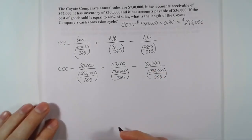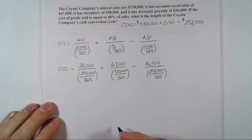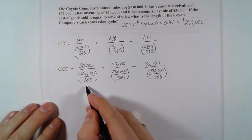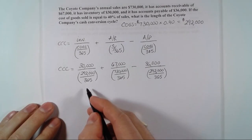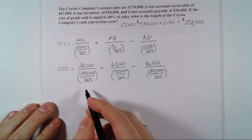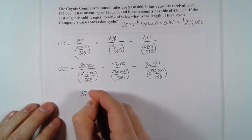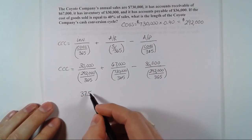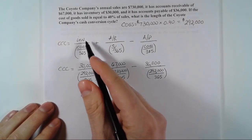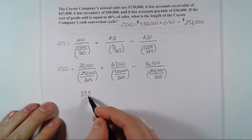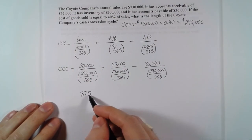Working out the first piece — the inventory conversion period — you should get 37.5 days. So it takes approximately 38 days from the time inventory comes in the back door of the business to when it is sold.